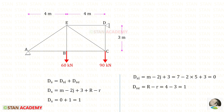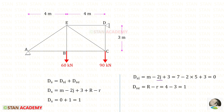Let us find the degree of static indeterminacy, that is DSI = DSI_internal + DSI_external. For internal static indeterminacy, the formula uses m (total number of members). Counting members: 1, 2, 3, 4, 5, 6, 7 — m is 7. j is the total number of joints: 1, 2, 3, 4, 5 — j is 5. For degree of internal static indeterminacy we will get 0.